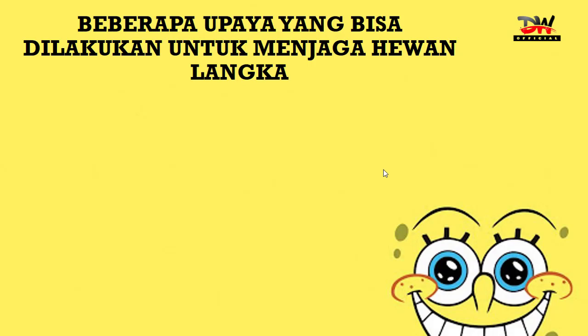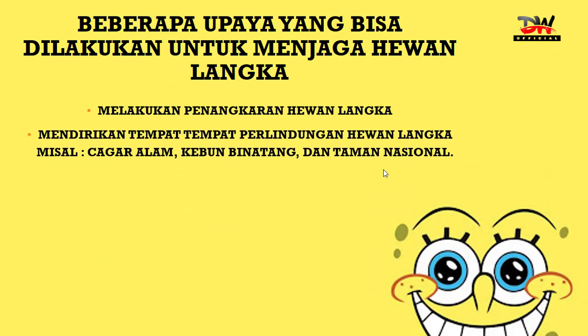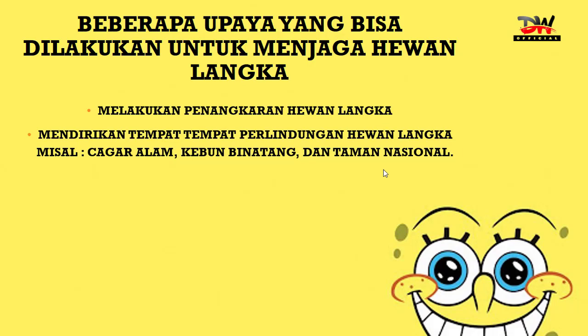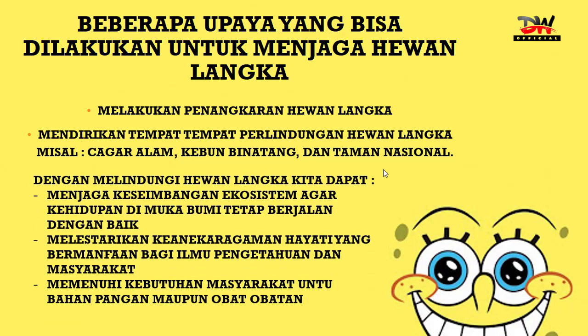Beberapa upaya yang bisa dilakukan untuk menjaga hewan langka: melakukan penangkaran hewan langka, mendirikan tempat-tempat perlindungan hewan langka seperti cagar alam, kebun binatang, atau taman nasional. Dengan melindungi hewan langka, kita dapat menjaga keseimbangan ekosistem agar kehidupan di muka bumi tetap berjalan dengan baik, melestarikan keanekaragaman hayati yang bermanfaat bagi ilmu pengetahuan dan masyarakat, serta memenuhi kebutuhan masyarakat untuk bahan pangan maupun obat.